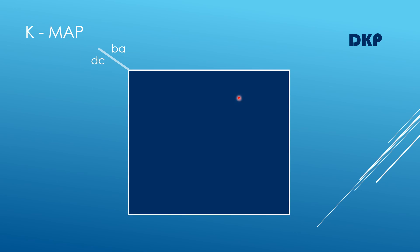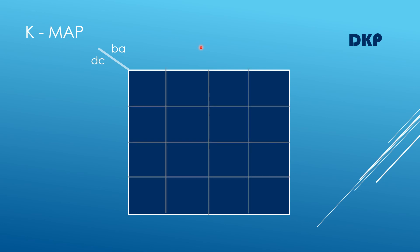Now let us plot the K-map. There are four inputs DCBA, so we draw a four-variable K-map. The four-variable K-map consists of 2 to the power of 4, which equals 16 cells, arranged in four rows and four columns. The cells are numbered 0 through 15. We then name the rows and columns using Gray code: 00, 01, 11, 10. The next step is to place the ones from the output of the truth table.